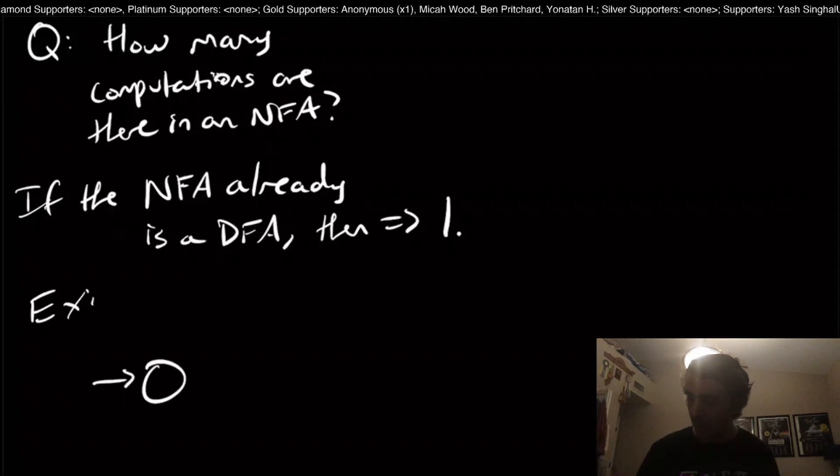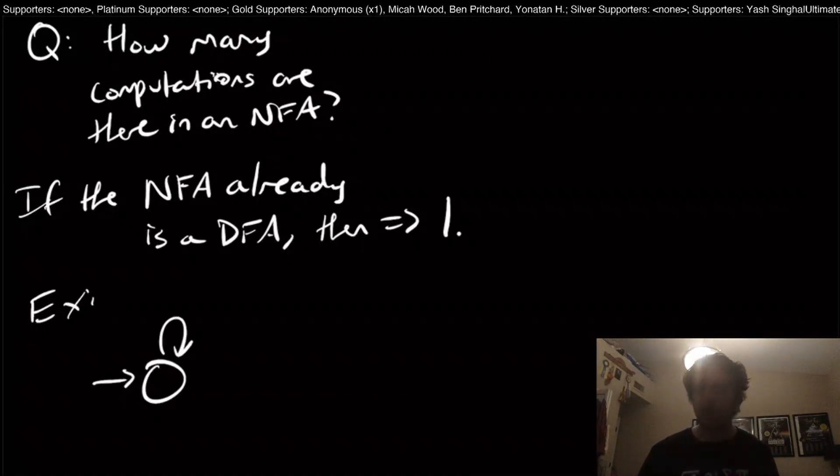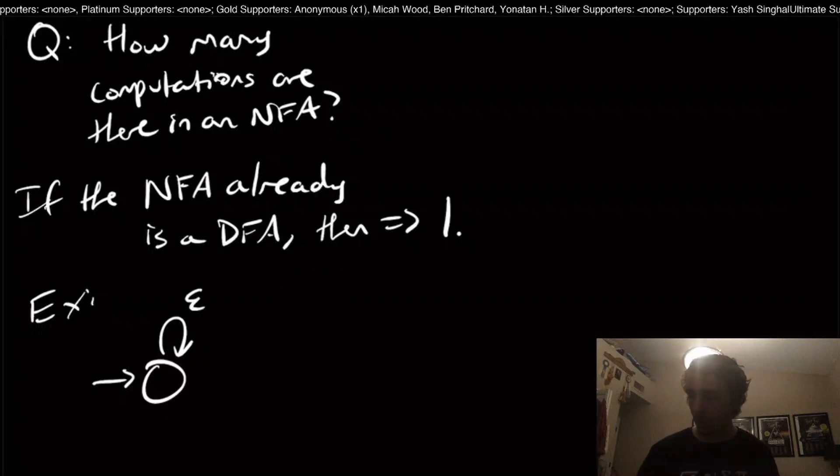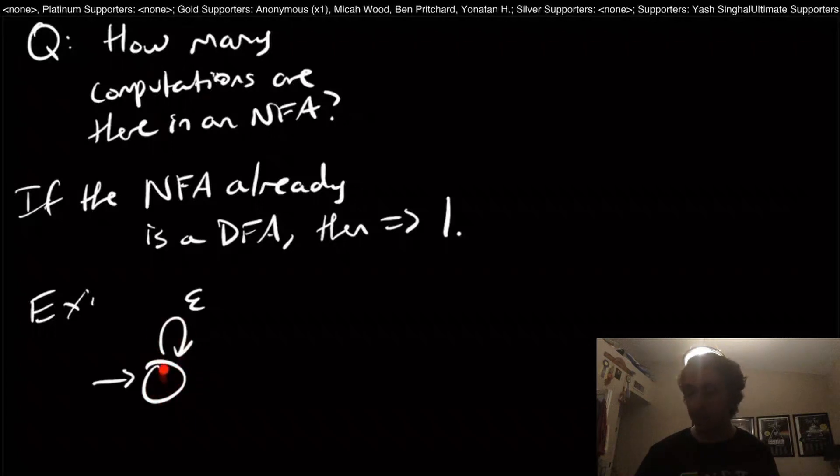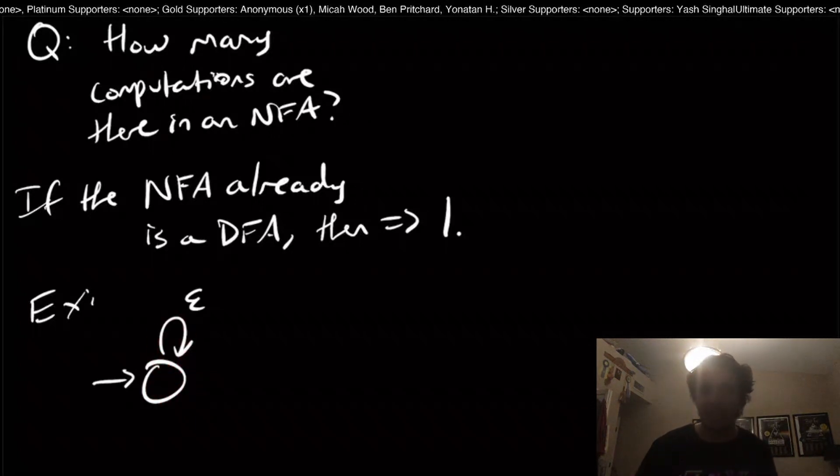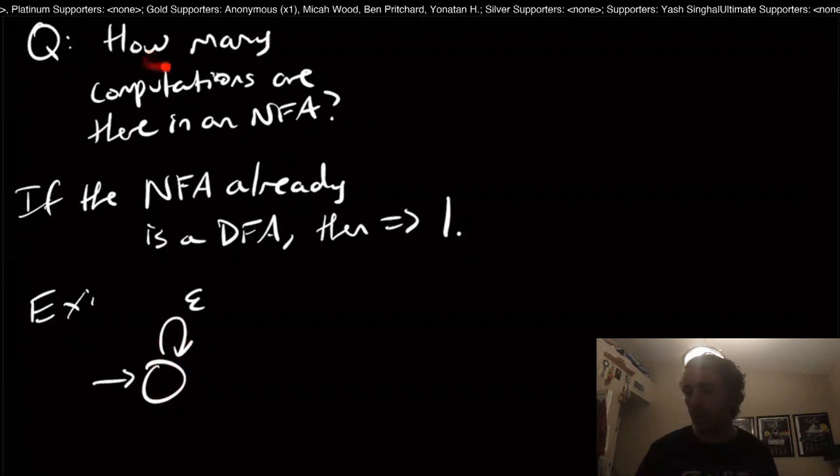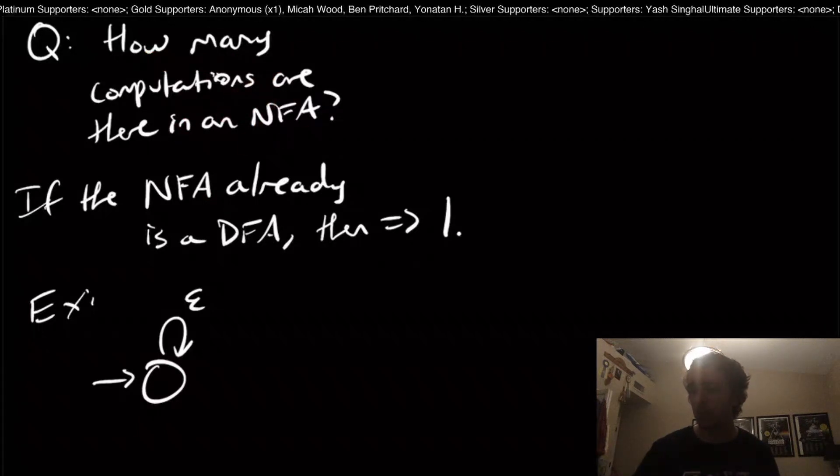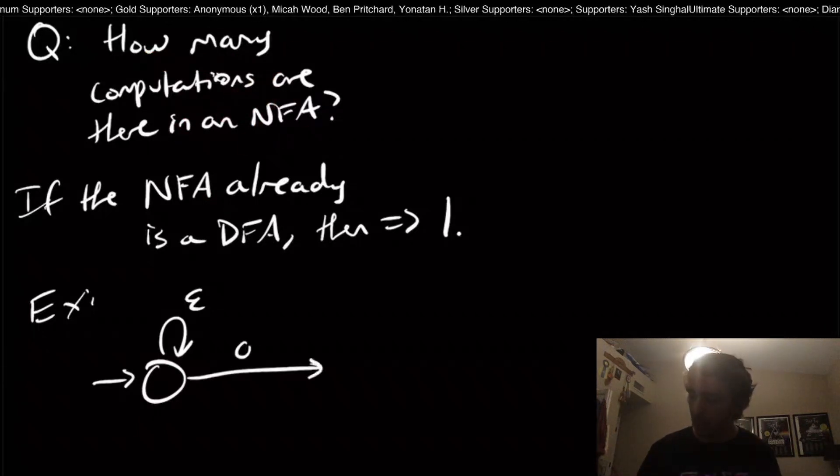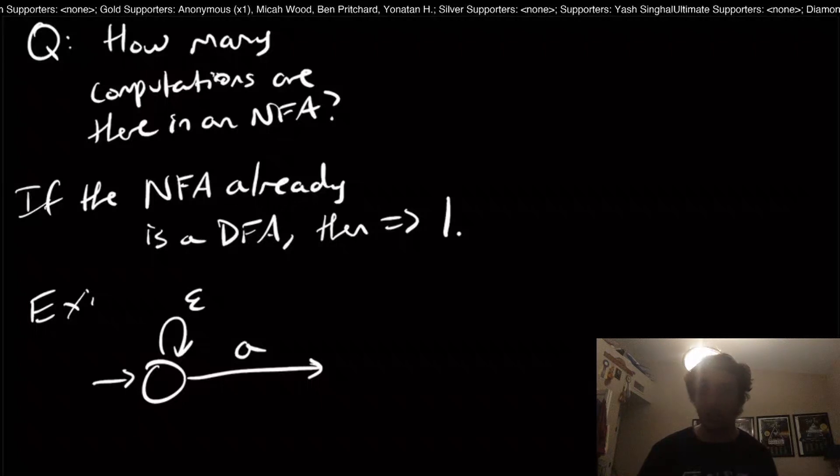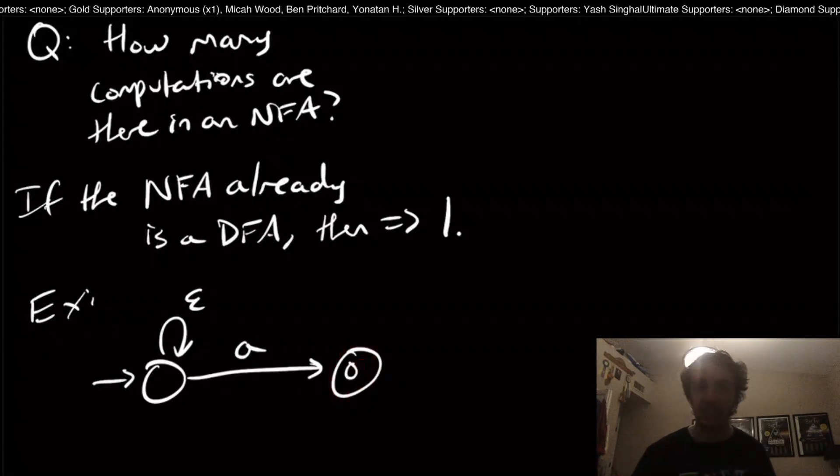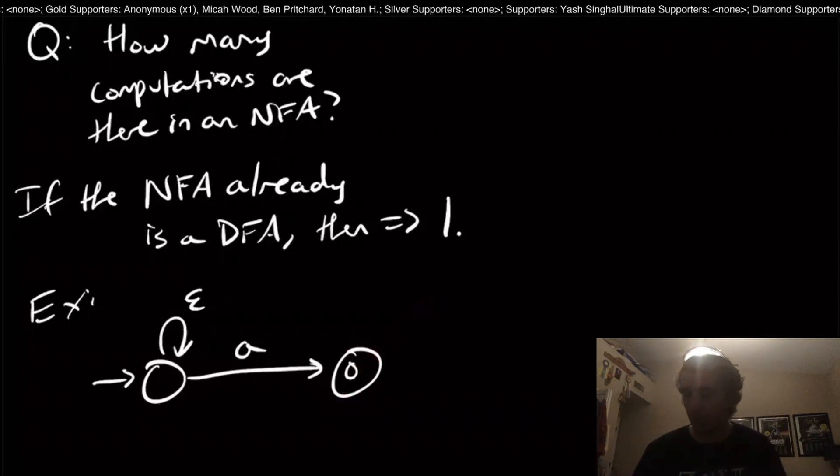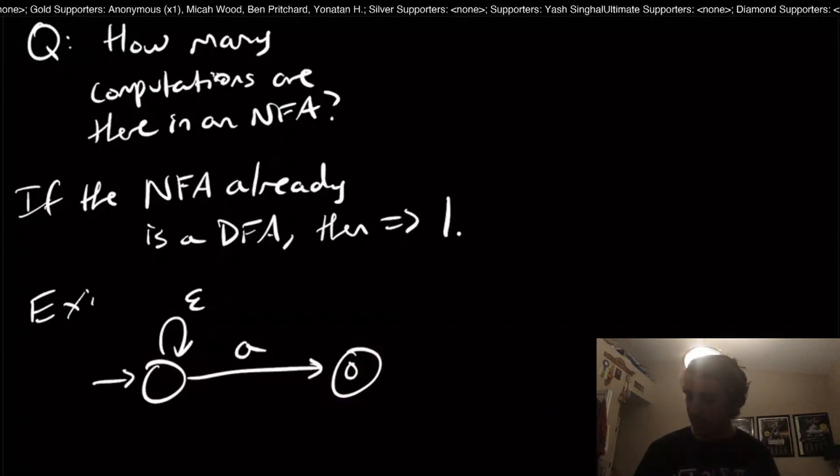Here we have a state that seems a little bit artificial, but it'll be important. I'm going to have a start state right here that has a self loop on epsilon, which may seem like it does nothing, but it's designed to help us with this question. I'm going to have a transition on A. Let's assume the alphabet is A to this state. And because it's an NFA, I can leave out transitions if I want to.